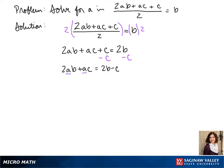So we're going to factor out an A on our left side. This becomes A times the quantity 2B plus C equals 2B minus C.